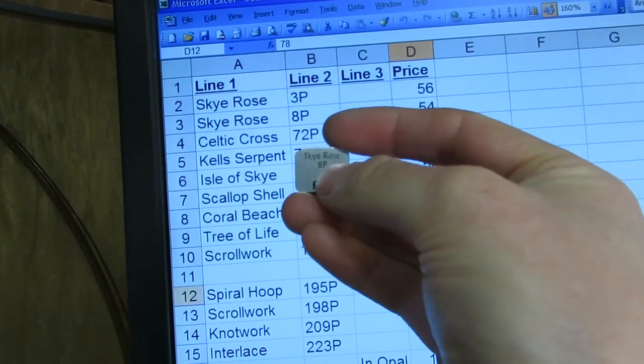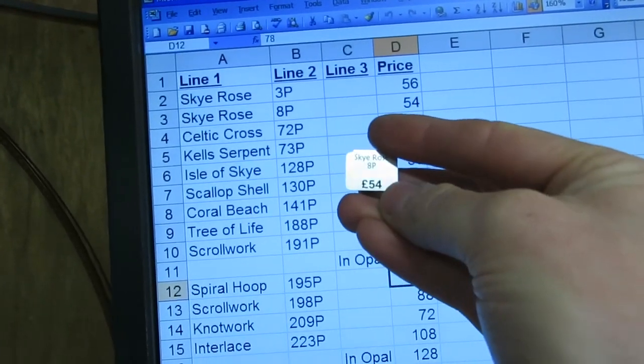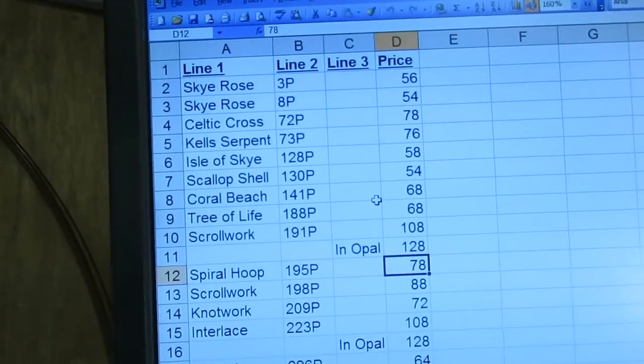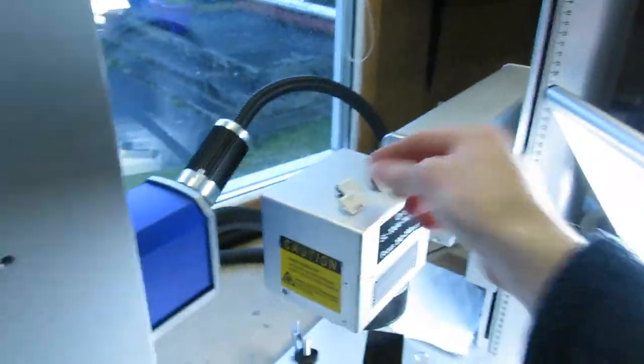Lines one, two and three appear in this font and the price appears down the bottom in bold font. Surprise, surprise. Put this past you.